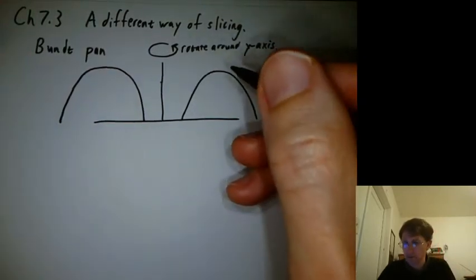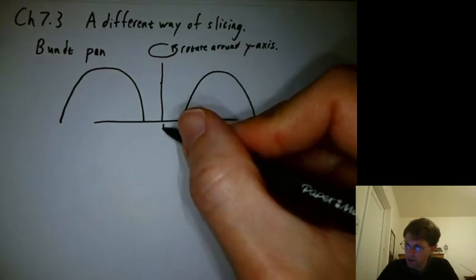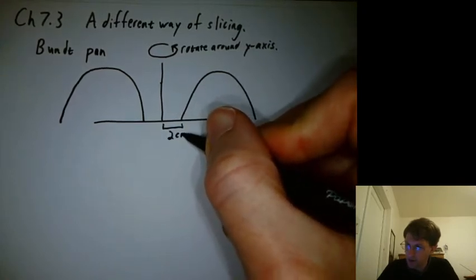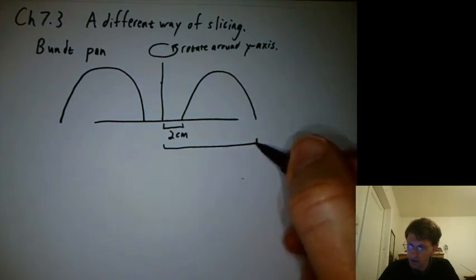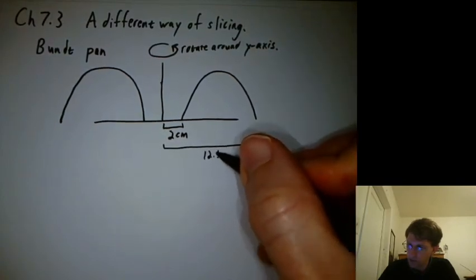I do have my ruler here. And this inner radius is about two centimeters, and from the origin out to here is about 12.5 centimeters.